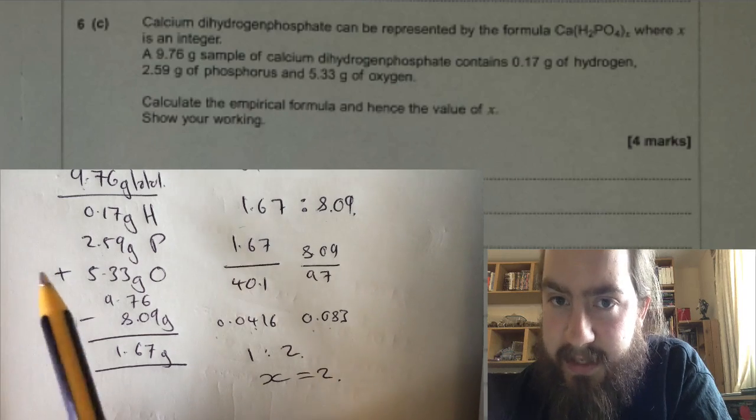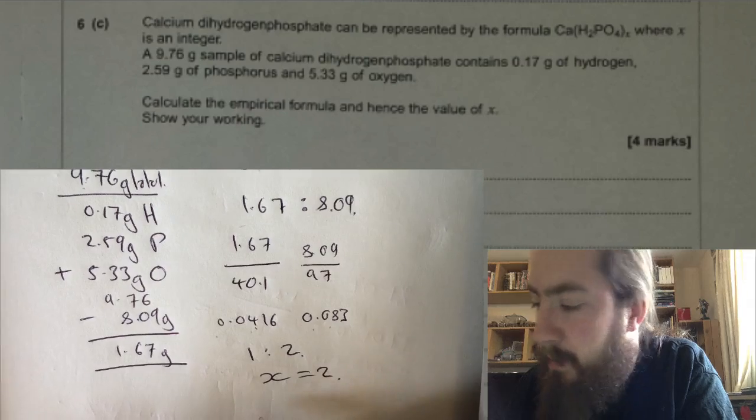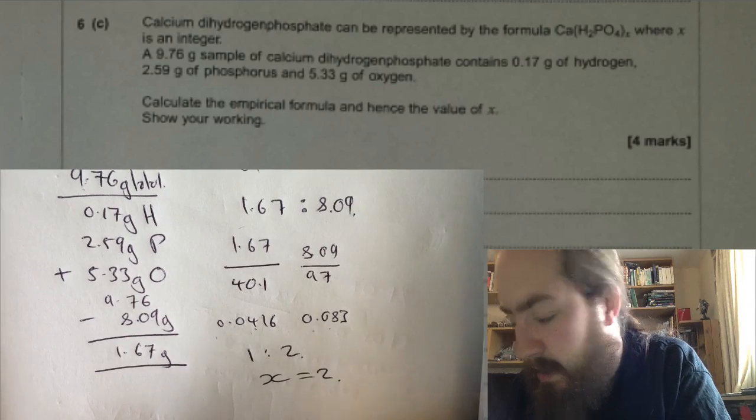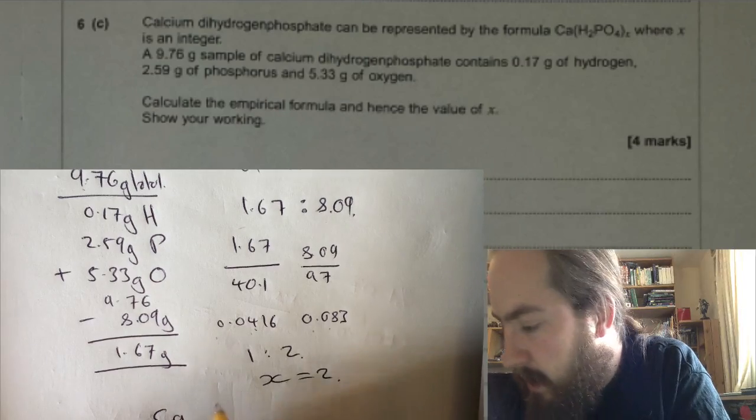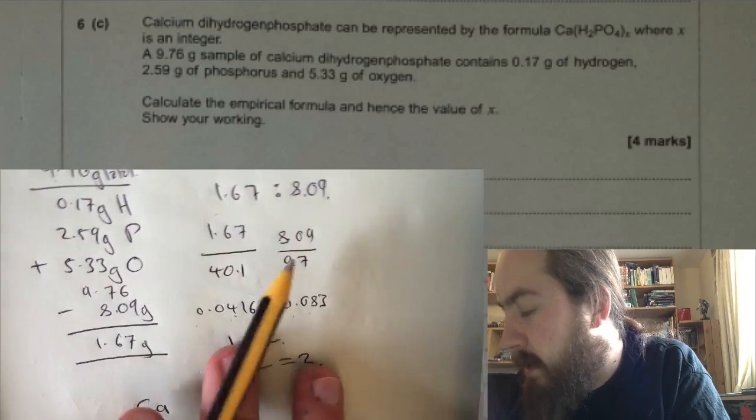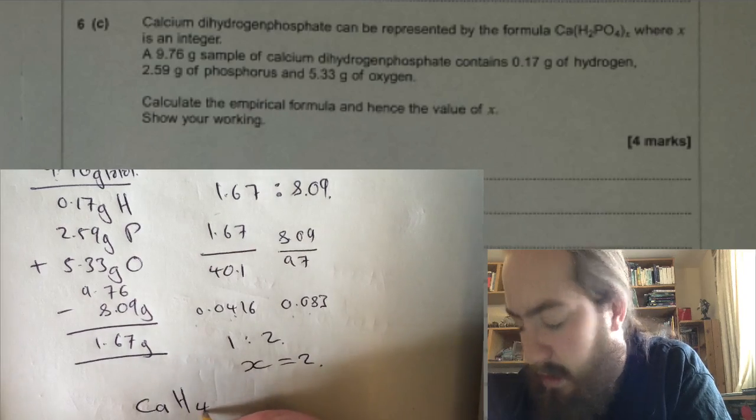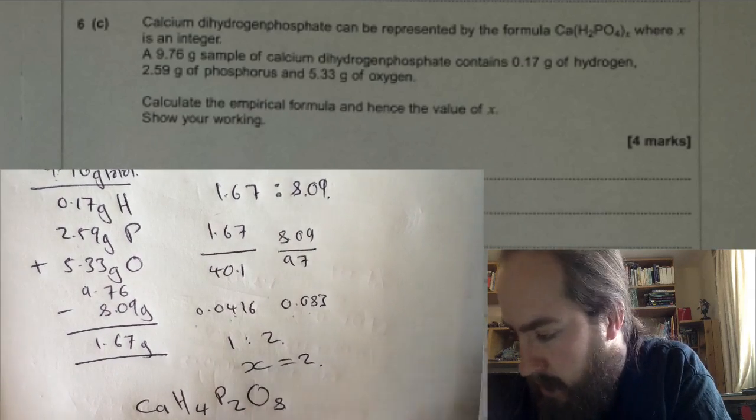Just to make sure that we get every mark in the question—it says calculate the empirical formula—so if that x equals 2, to calculate the empirical formula it's going to be Ca, and then everything in the brackets times 2, so it'd be H₄P₂O₈.